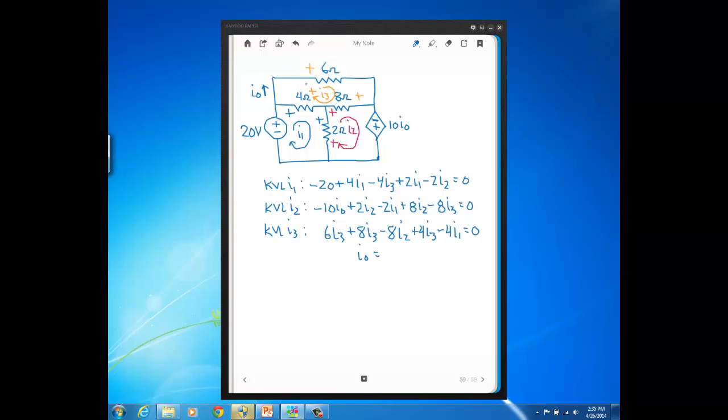So if we look here, I0 is the current defined right at this part of the circuit. Well at this part of the circuit only mesh current I3 is defined where I0 is, so I0 just equals I3. So I just plug in I3 right here and now I got three equations, three unknowns and I can go ahead and solve.